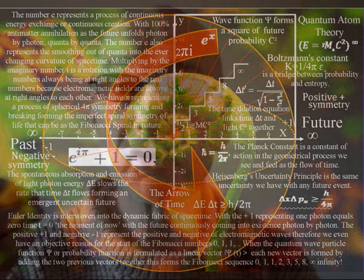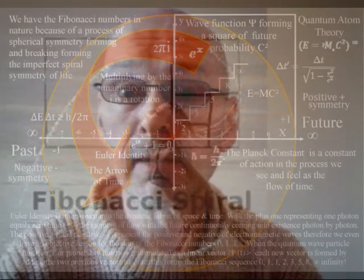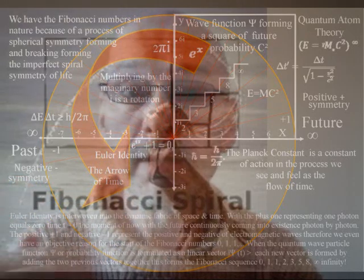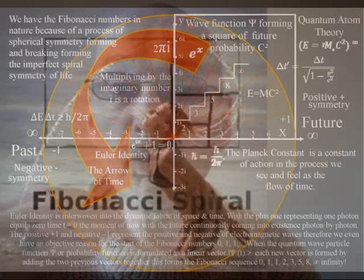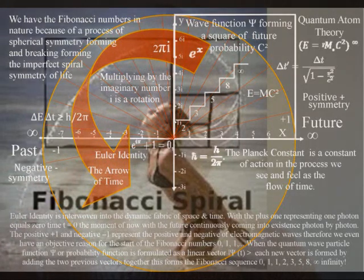This is because if the spontaneous absorption and emission of light in the form of a quantum wave particle function is formulated as a linear vector, each new vector is formed by adding the two previous vectors together. This forms the Fibonacci sequence.